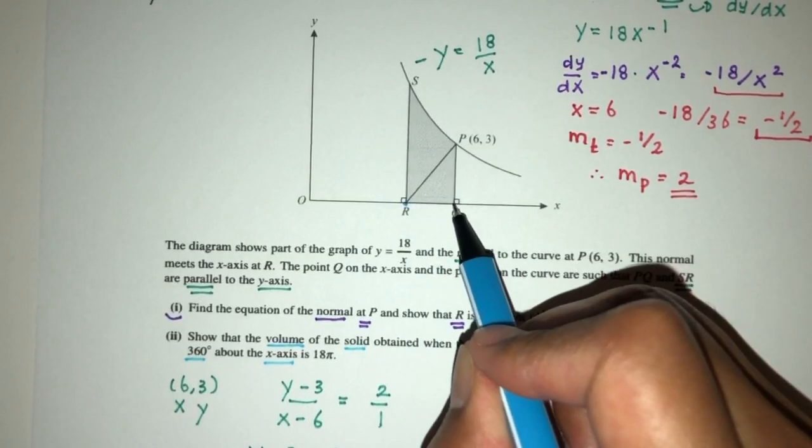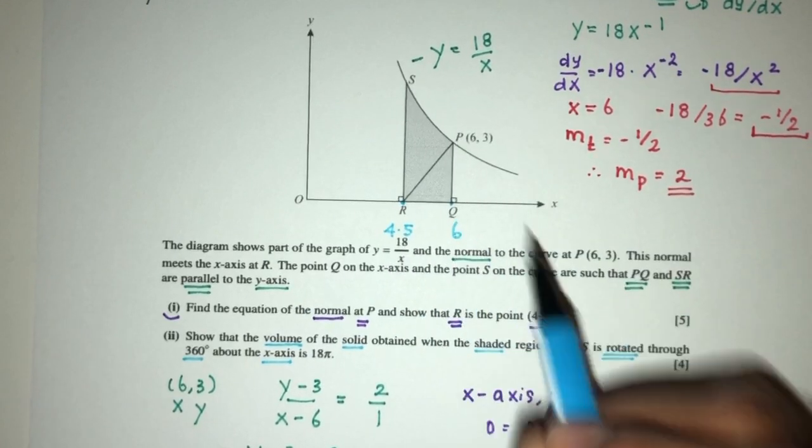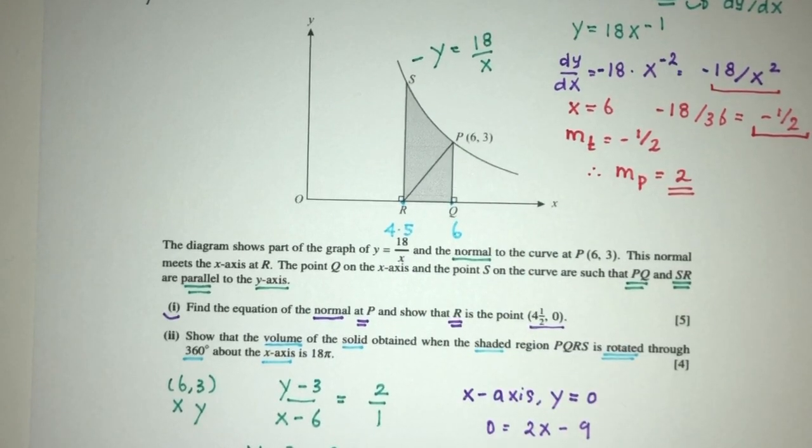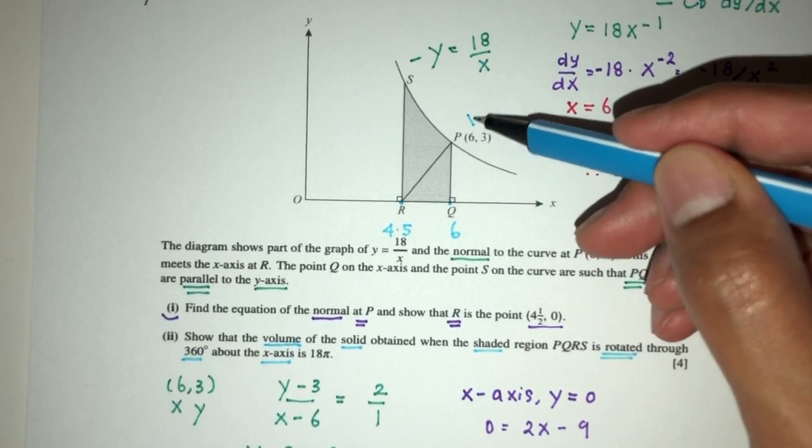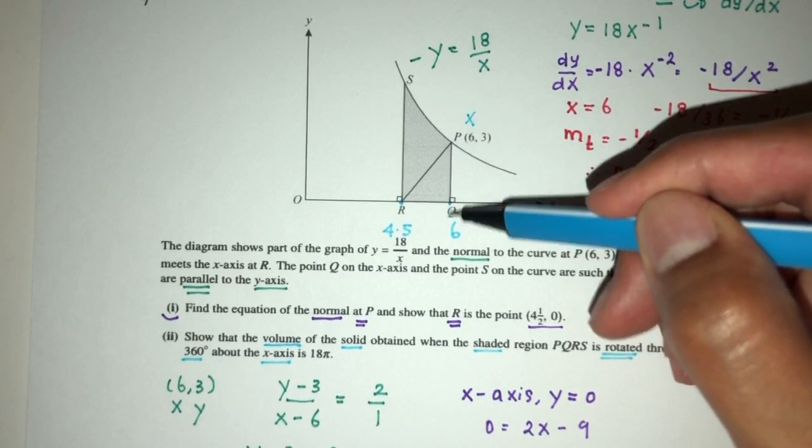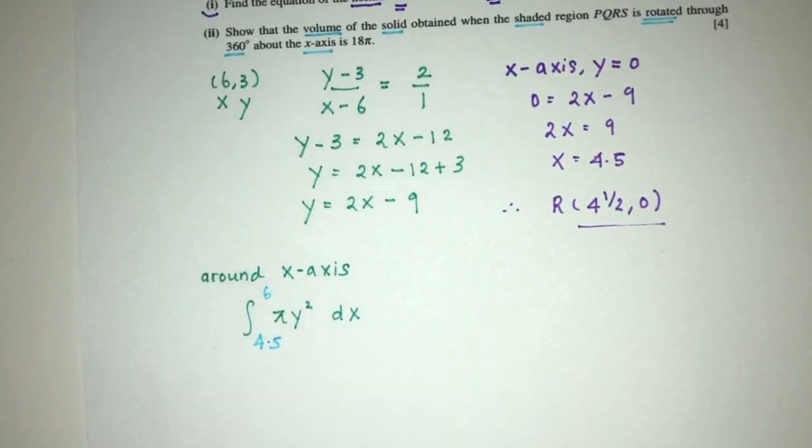Now what are the limits? We have this point and this point. This is 4.5 and point Q is simply 6. This is the x value of point Q because it is directly below P. P has x value 6. If it is exactly below, it will be 6 as well. So the limits will be 6 and 4.5.